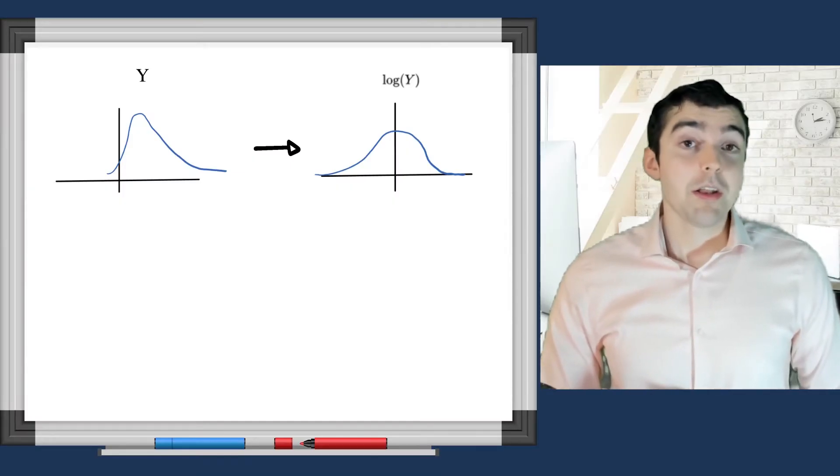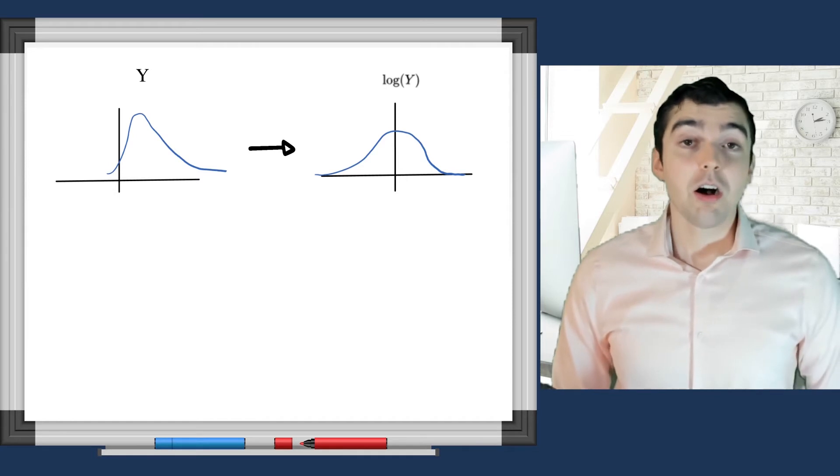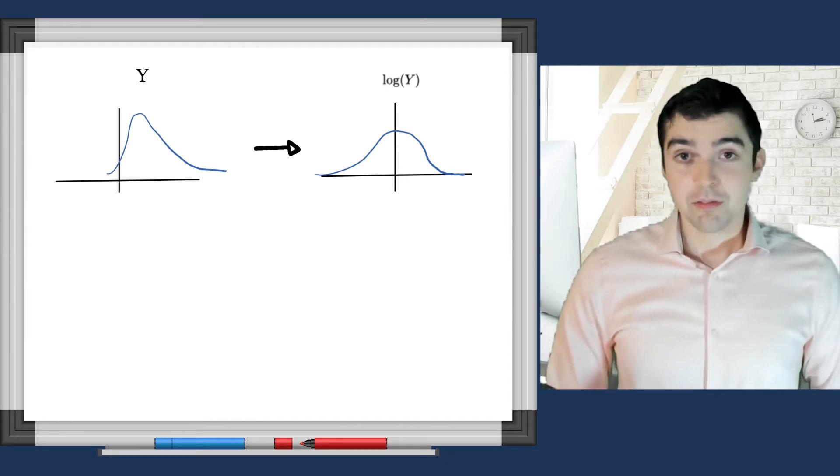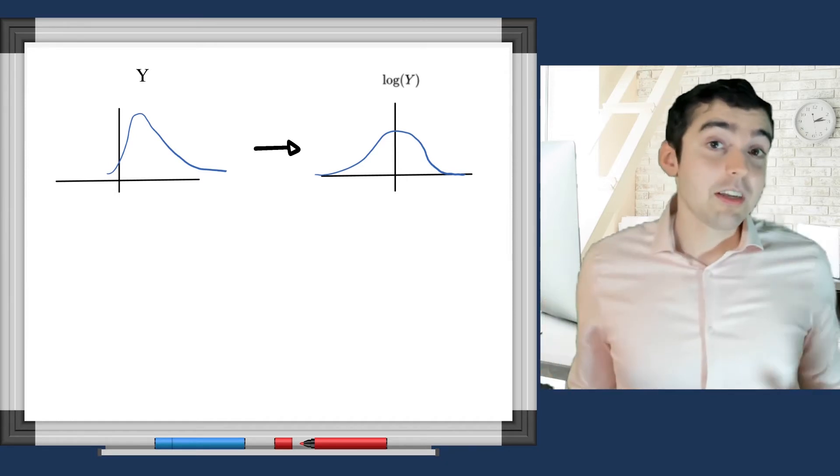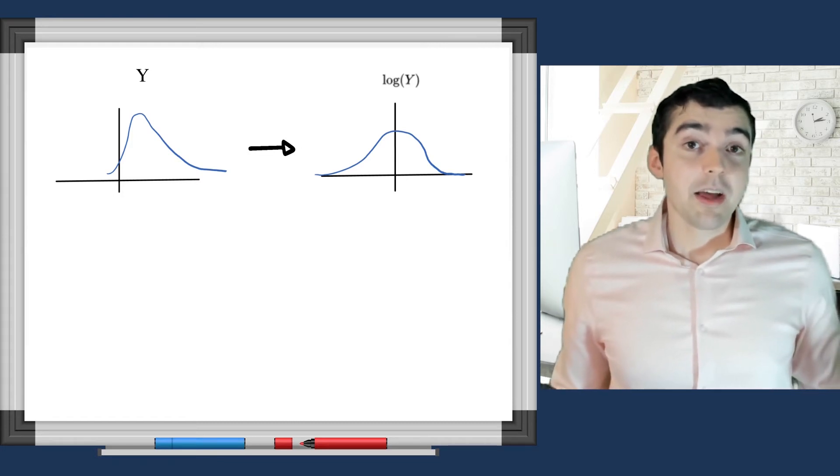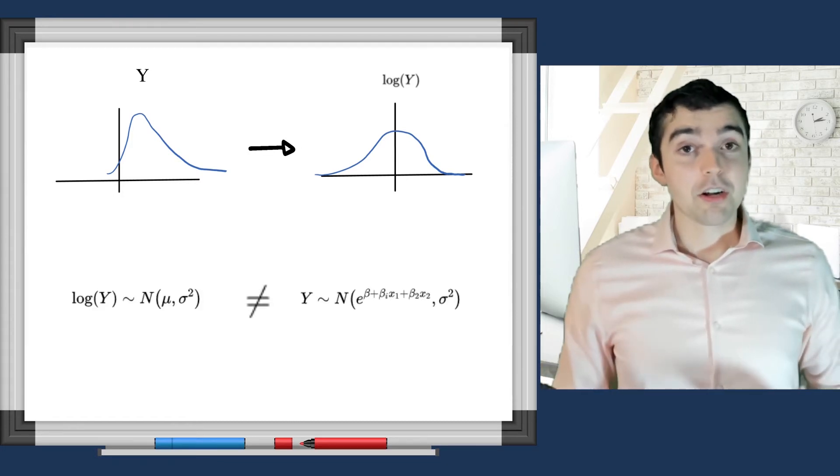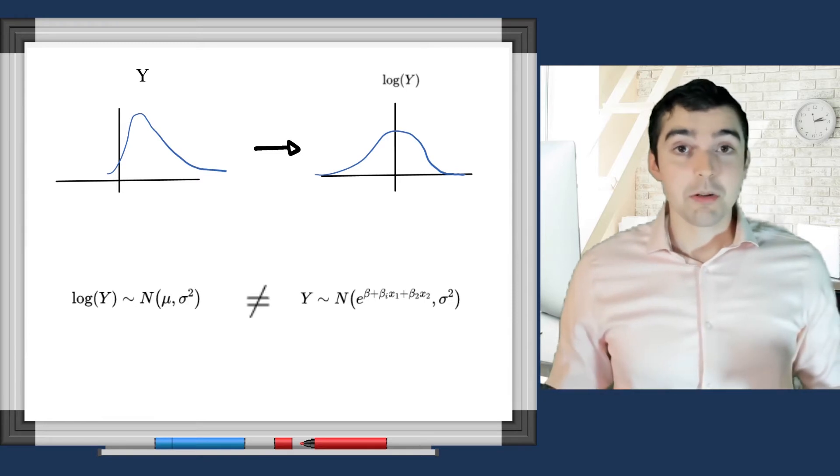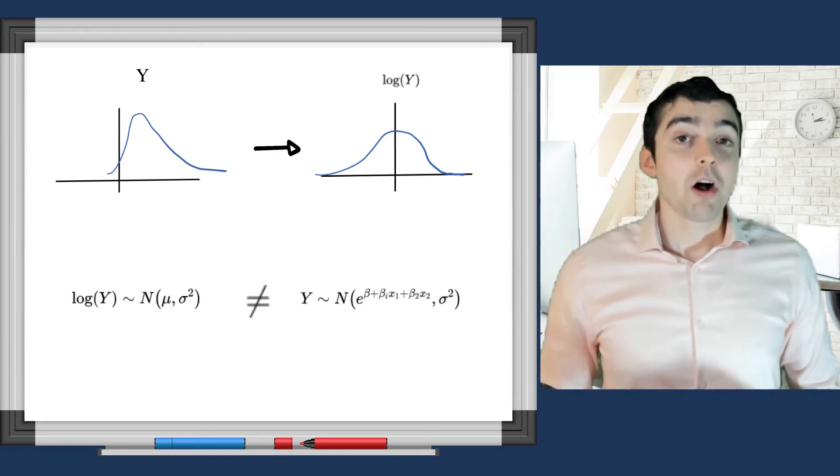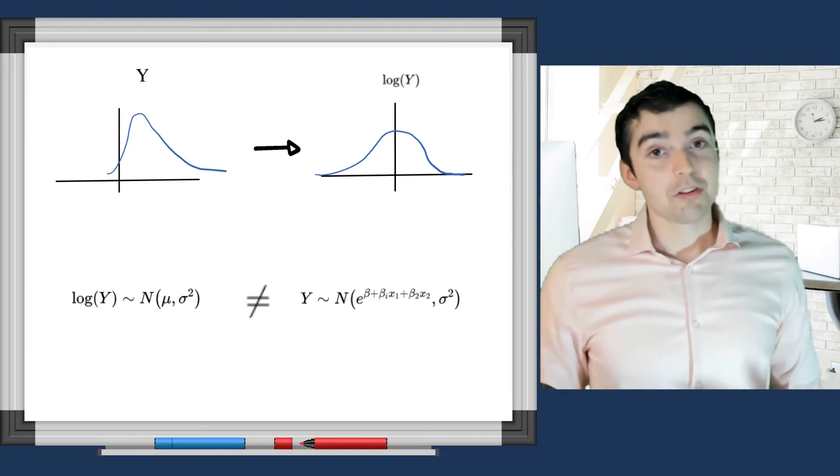A really common question is, what's the difference between a log link function and a log transformation? If you have taken a regression course, you've seen when they take a log of the target variable.